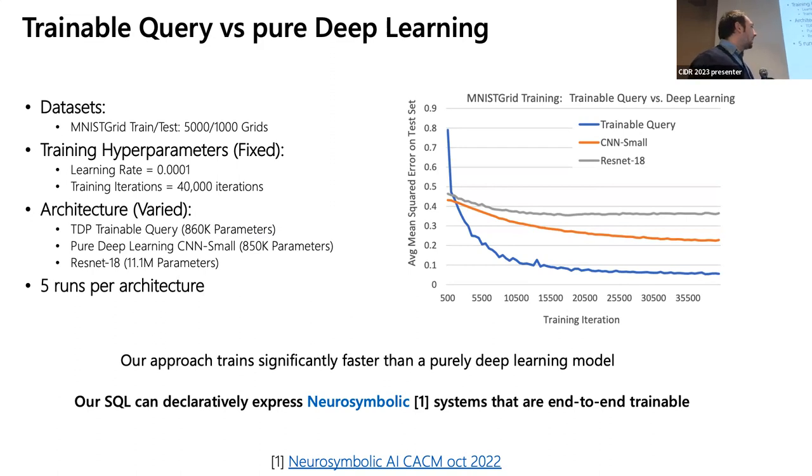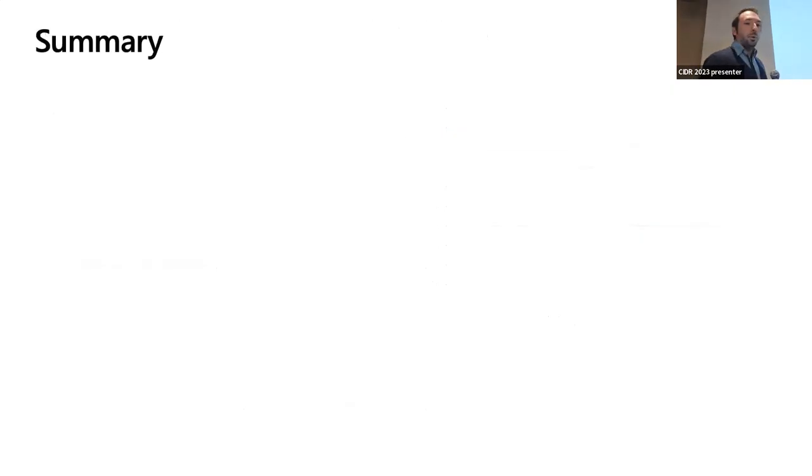This also allows us to express what in the literature is called neurosymbolic systems. And it's a nice way because so far all the neurosymbolic literature is focused like Prolog and Datalog that no one wants to use, as we all know. And this eventually will allow us to make neurosymbolic systems a little bit more popular. Okay.